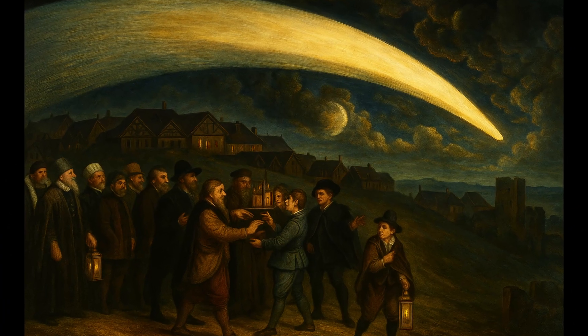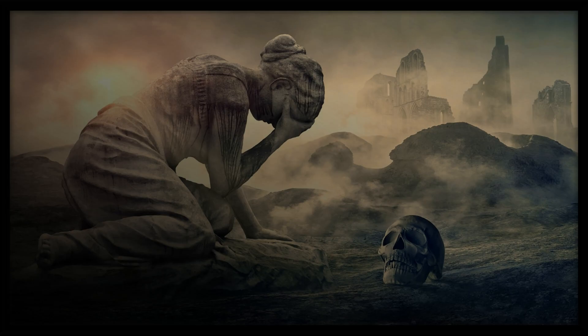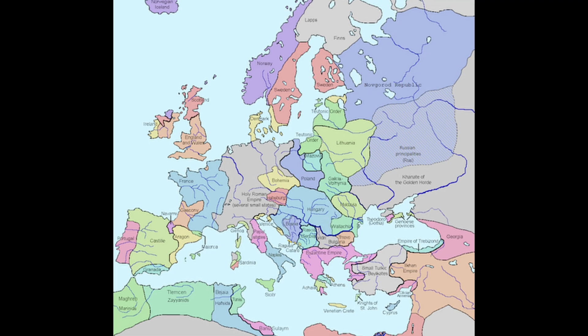In the 14th century, the Great Comet of 1301 was seen as a sign of judgment and fear, appearing just before the disastrous Great Famine of 1315 that devastated Europe.